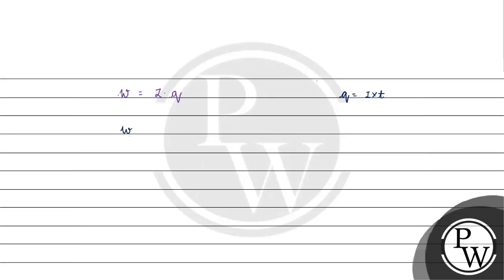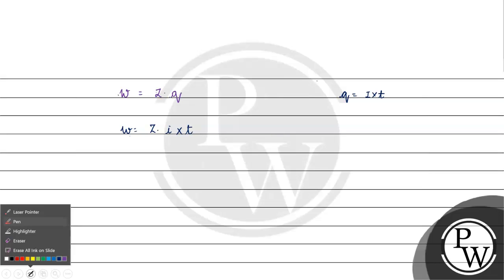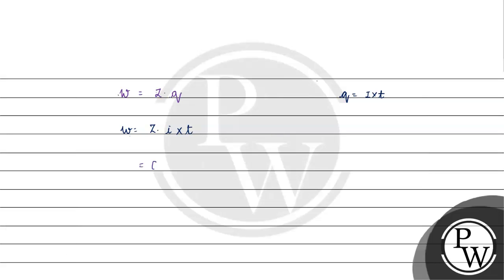The formula is W equals Z into Q. Now, what is the value of Z? Z is basically E by 96,500. What is E here?